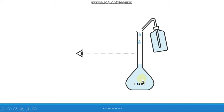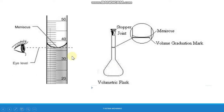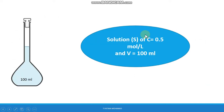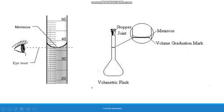To correctly read the line mark, your eye level should be at the meniscus. The meniscus is the lowest point of the surface of the liquid. The line mark should be directly below the meniscus of the solution. After adding water to the line mark, shake the flask well to homogenize the solution.